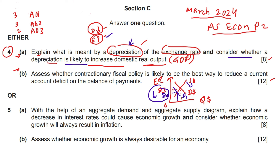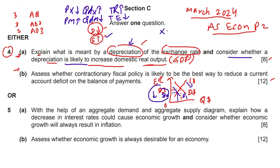If currency depreciates, what happens to real output? Depreciation makes exports cheaper — the price of exports falls, so quantity demanded for exports rises and total revenue from exports increases. On the other hand, the price of imports increases, demand for imports falls, and total expenditure on imports also falls. When export revenue increases and import payments fall, net exports (X minus M) rise.